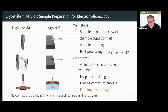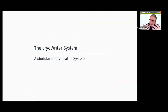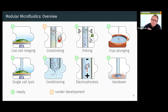These are enabling technologies. Since we need so little starting material, we can think about new experiments. To this end, we built up a complete system we call the CryoWriter, which combines many different modules that can be arbitrarily combined to do a specific experiment.